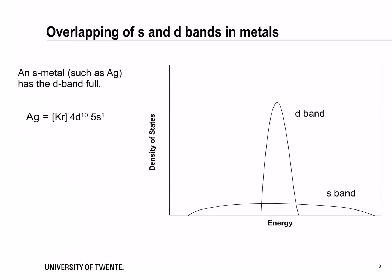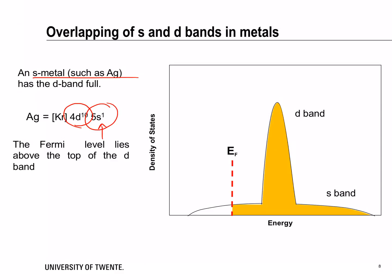Now let's look at an s-metal such as silver. In silver, the d-shell is actually filled and the s-shell is partially filled. This tells us that the Fermi level has to fall somewhere across the s-band, which is exactly what happens — the Fermi level falls somewhere above the d-band, so the d-band is completely filled and the s-band is partially filled.